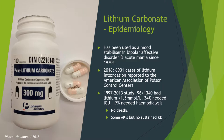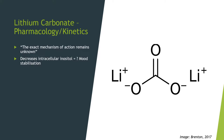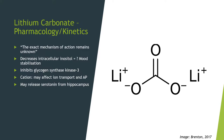The exact mechanism of action of lithium remains unknown. We think it decreases intracellular inositol, which may cause mood stabilization. It also inhibits glycogen synthase kinase-3, which has an important role in neuroplasticity, neuroprotection, and energy metabolism. Lithium is a cation and may behave like sodium and potassium, affecting ion transport and neuronal action potentials. It may also release serotonin from the hippocampus. It has high bioavailability and reaches peak blood levels in one to two hours in immediate-release formulation.